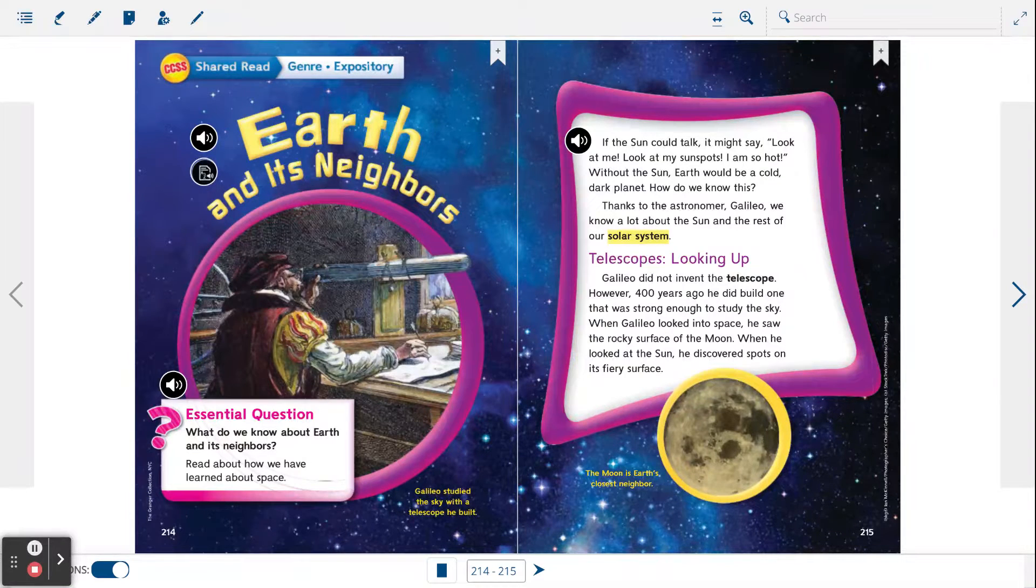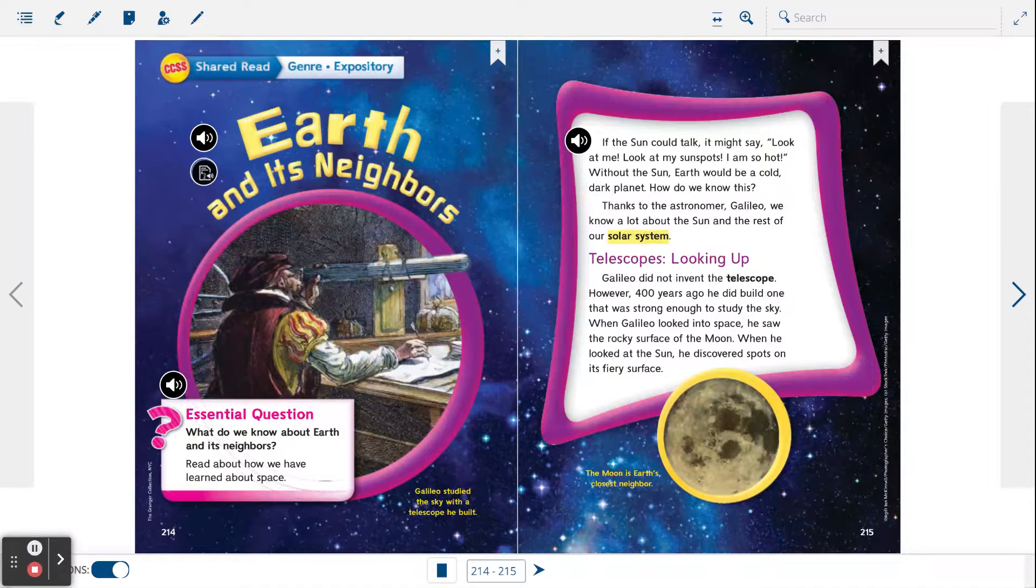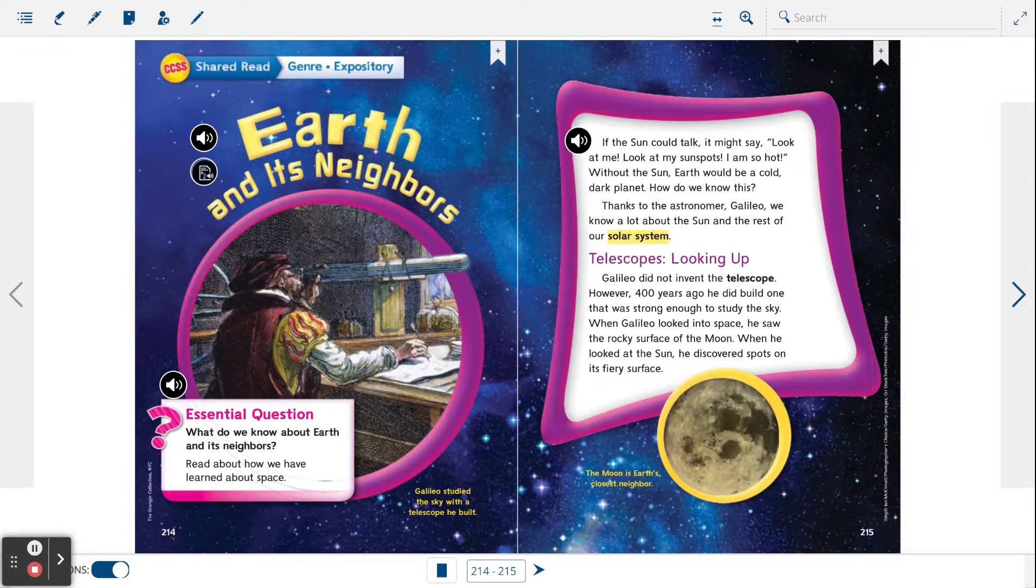Telescopes looking up. Galileo did not invent the telescope. However, 400 years ago, he did build one that was strong enough to study the sky. When Galileo looked into space, he saw the rocky surface of the moon. When he looked at the sun, he discovered spots on its fiery surface.